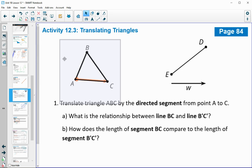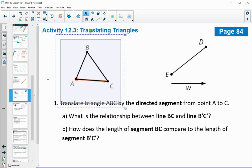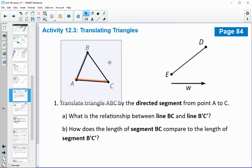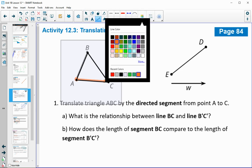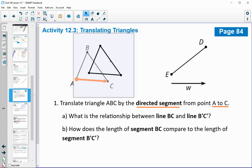All right, then we're going to move on to activity 12.3, and you're going to see that I have some tracing paper here. I want you to set the tracing paper on top of triangle ABC, and I want you to trace it. You'll see on my tracing paper, I have that triangle traced. Number one asks us to translate triangle ABC by the directed line segment that goes from A to C. So you'll see on my diagram, I actually drew that segment so we can see it.